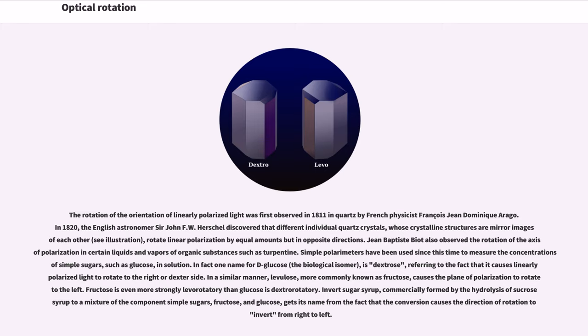Jean-Baptiste Biot also observed the rotation of the axis of polarization in certain liquids and vapors of organic substances such as turpentine. Simple polarimeters have been used since this time to measure the concentrations of simple sugars, such as glucose, in solution. In fact one name for D-glucose is dextrose, referring to the fact that it causes linearly polarized light to rotate to the right or dexter side.